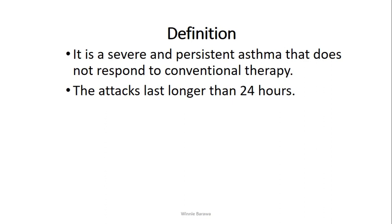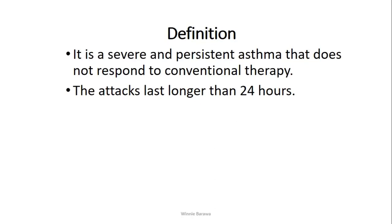What is the definition of status asthmaticus? As the name suggests, there's the word asthma, so this is actually a severe and persistent form of asthma that is not responding to conventional therapy or the management given to the asthmatic patient. This attack is also known to last longer than 24 hours. So if you have an asthmatic client with recurrent episodes that are not responding to therapy, you could consider the possibility that this client is complicating to the state of status asthmaticus.